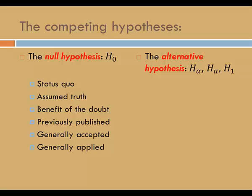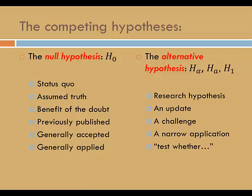The opposition is the alternative hypothesis. This can be denoted H-alpha, H-A, or H-1. This is the research hypothesis. It could be an update from previously published information, a challenge to a generally accepted truth, or a narrower application. When you see the phrase 'test whether,' it's generally the alternative hypothesis that follows.